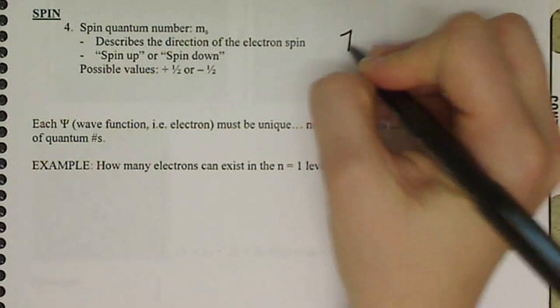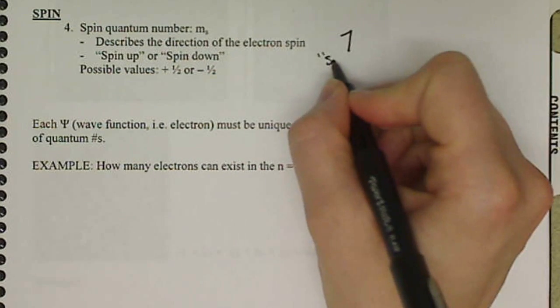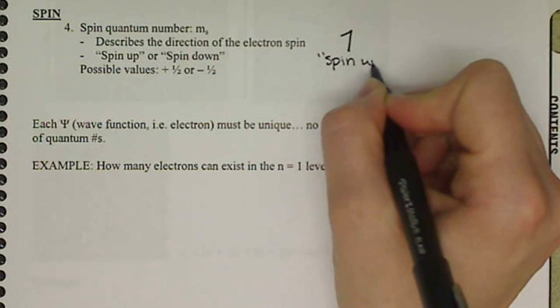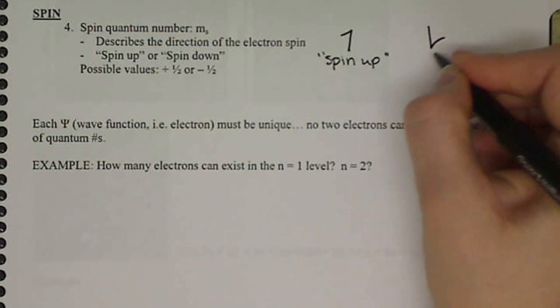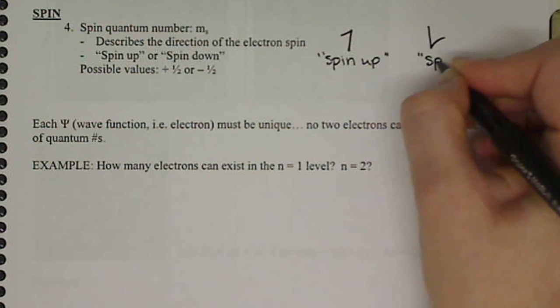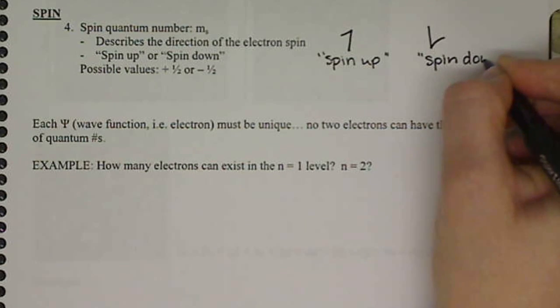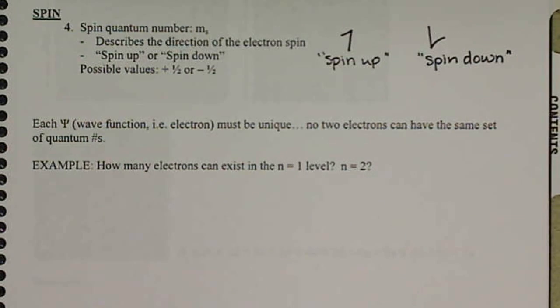So we represent spin up with a half up arrow, and then spin down would be the matching down half arrow. You can also think of this as spin counterclockwise versus spin clockwise, kind of that concept to it.